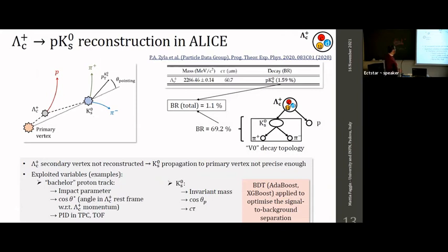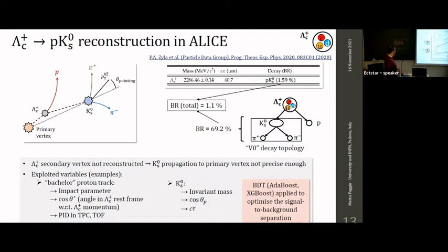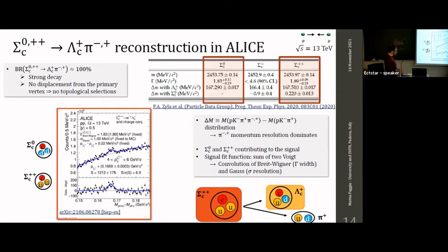Another channel exploited for Lambda_c reconstruction is the pK0short channel — a two-pronged topology where we have a proton (bachelor track) combined with a V0 decay of the K0short. The reconstruction variables are divided into categories: one for the bachelor proton track, and another for the decay topology of the V0. Machine learning techniques such as boosted decision trees were found very useful to optimize the signal-to-background separation in this channel.